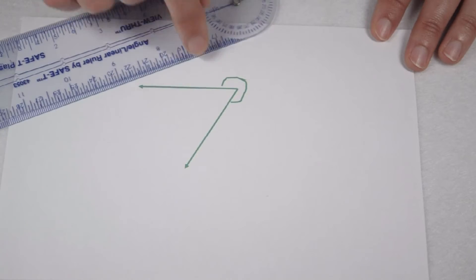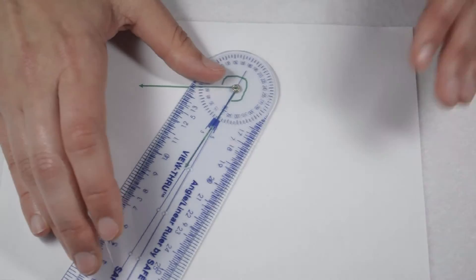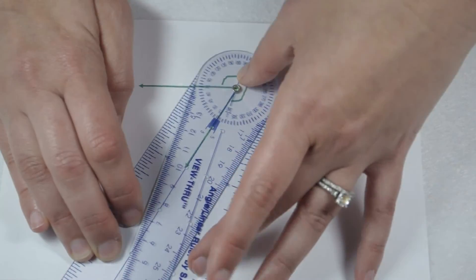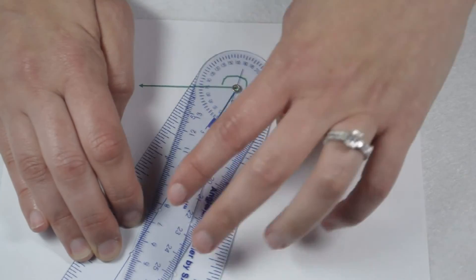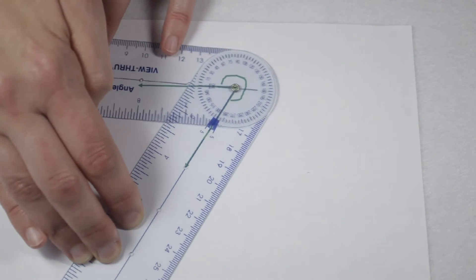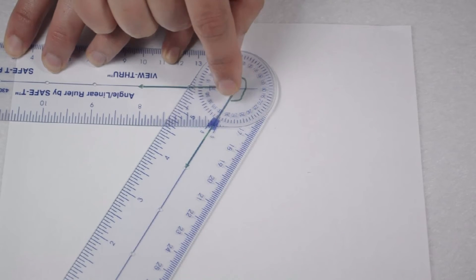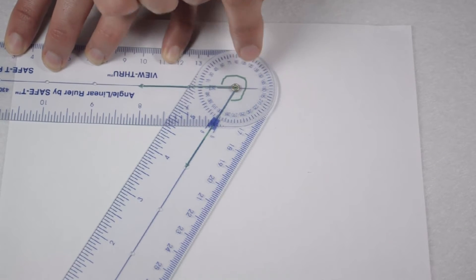In order to measure this angle, we're going to line up along our ray that points more towards the bottom. I'm going to line that up, and when I swing my top arm, it's going to follow this outside curve. When I do, I can see it swings all the way to 300 degrees. So this is a 300 degree angle.